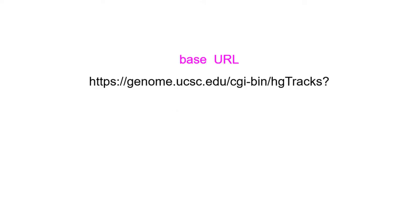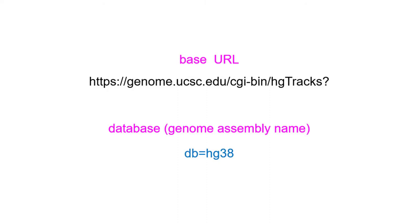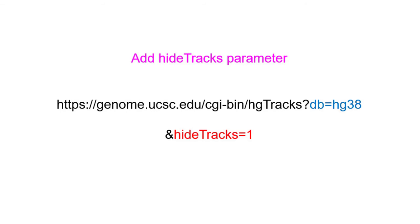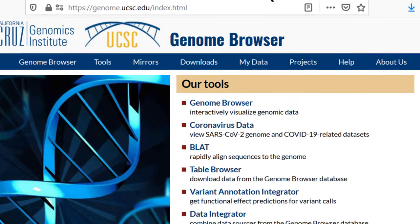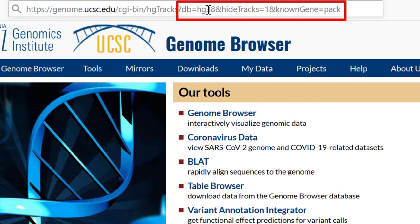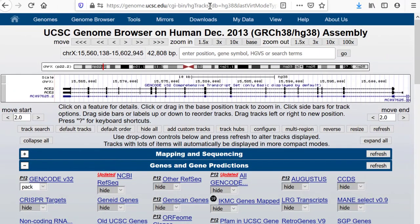Let's start by building a URL using the principles we discussed in Part 1 and jump right into the browser. We'll start with the basic URL, add a database assembly name hg38, turn off all the default tracks with the hide tracks parameter, and turn on the GenCode genes track to pack using the known gene table. Because this URL has no position information, it will go wherever you may have been in the genome before. The next step will be to specify a location.